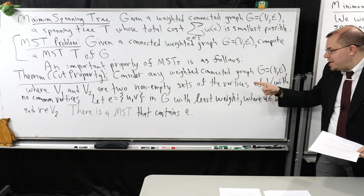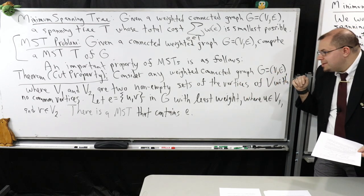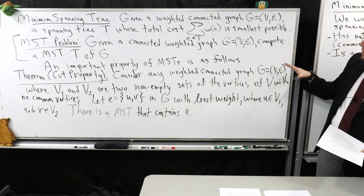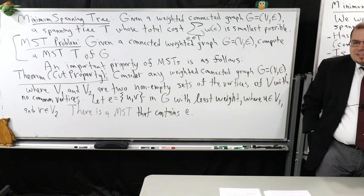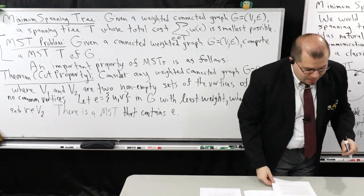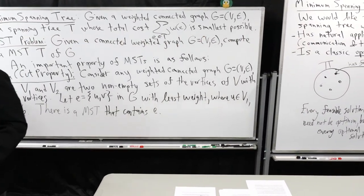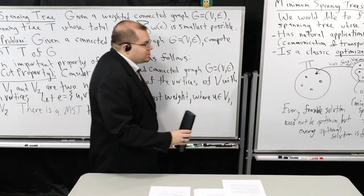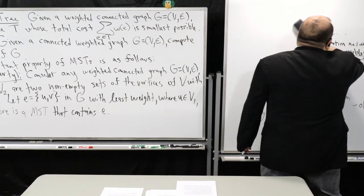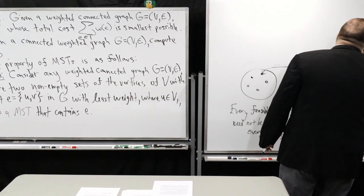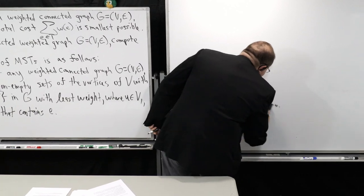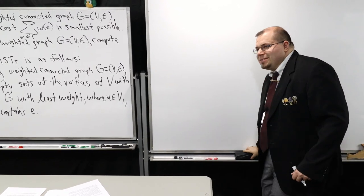If we can make sure that we pick this edge E, then most certainly I'll have one step forward towards getting a minimum spanning tree. I want to talk about what this cut property exactly means and give a sketch of the proof. I'm going to give you an algorithm that exploits this property — in fact I'll mention briefly another algorithm as well, but I have more details about that in the notes.